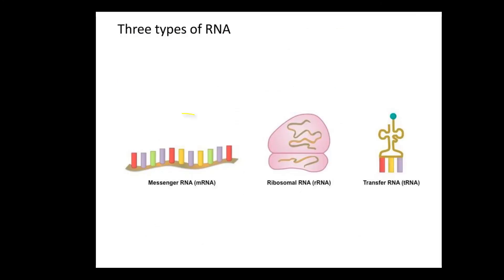There are three types of RNA. Messenger RNA acts as a go-between between DNA and protein. Ribosomal RNA, along with some protein, is what ribosomes are made of. And transfer RNA transfers in amino acids.